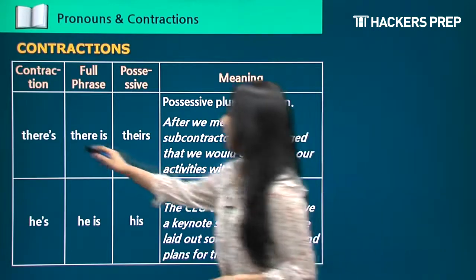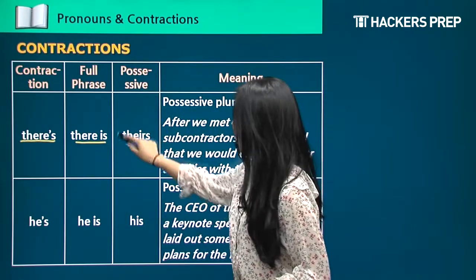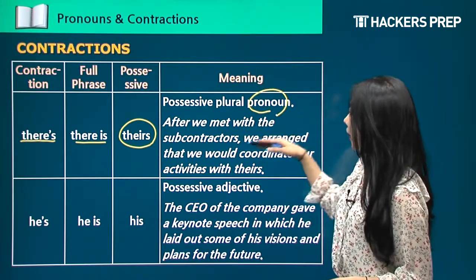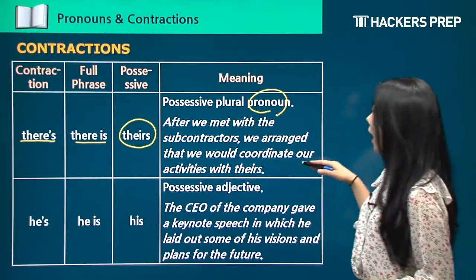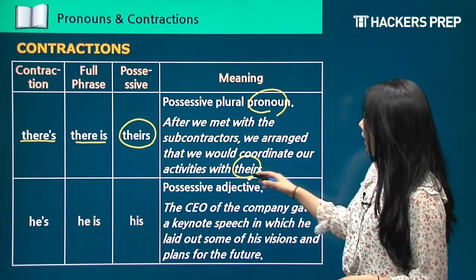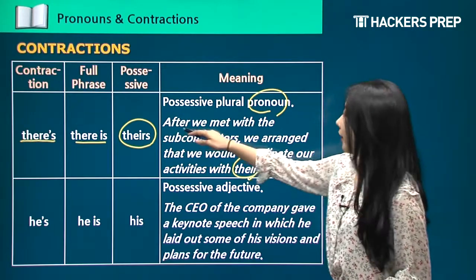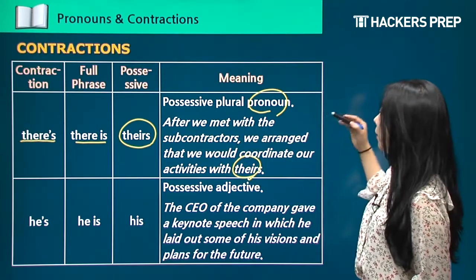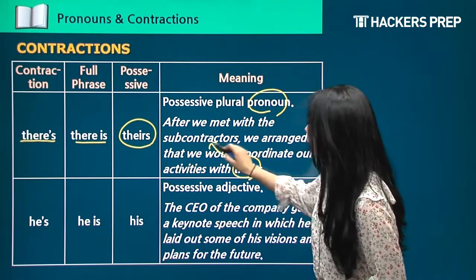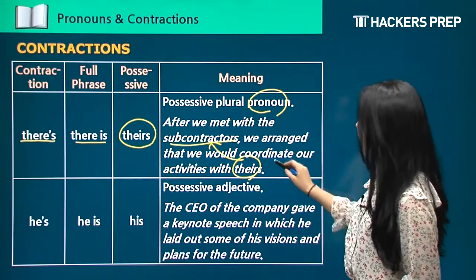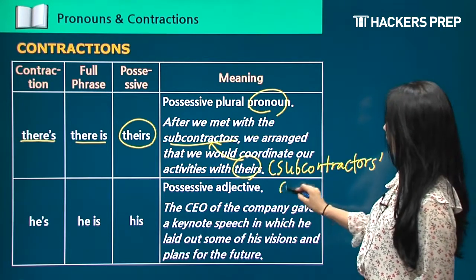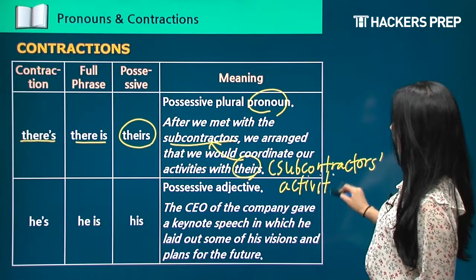What about 'there's'? That's 'there is.' And then the possessive pronoun 'theirs.' For example: 'After we met with the subcontractors, we arranged that we would coordinate our activities with theirs.' Here, 'theirs' refers to the subcontractors' activities — so it's the possessive pronoun standing in for the subcontractors and their activities.